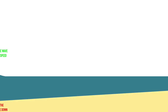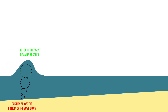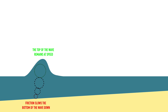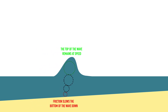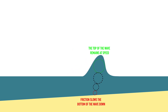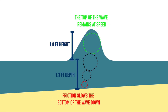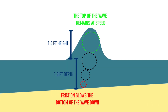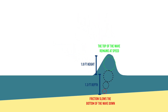As the wave continues to shoal, the wave height continues to increase and the drag on the ocean floor slows the bottom of the wave down faster than the top. The higher the wave becomes, the greater the difference in speed between the bottom of the wave and the top, creating a very unstable lump of water.